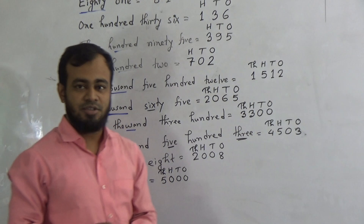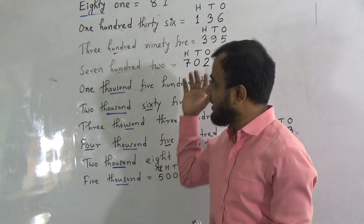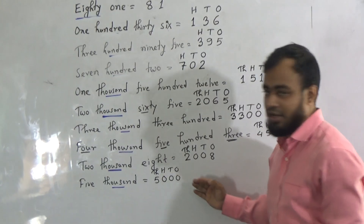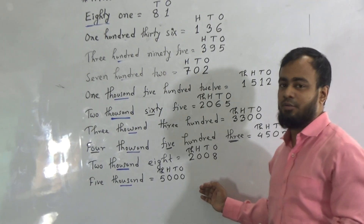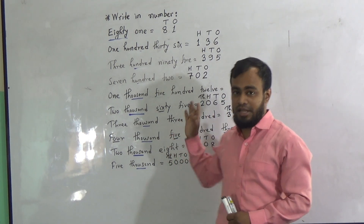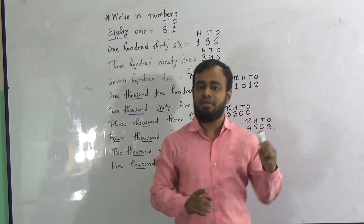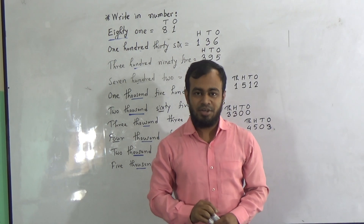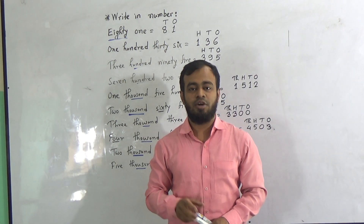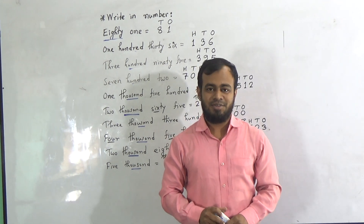My dear students, I think you have understood the structure. Your homework is the same as our classwork today. That means these 10 numbers, you must write down in number form in your CW copy. Please mention it is HW number 1 in your left corner, and please write down the date in the right corner of your copy. You can submit your homework every Saturday from 9 a.m. to 3 p.m. See you again. Allah is great.